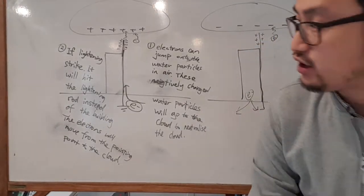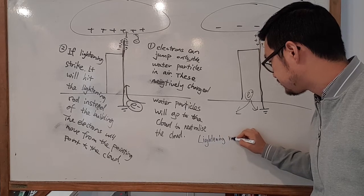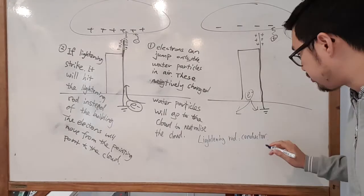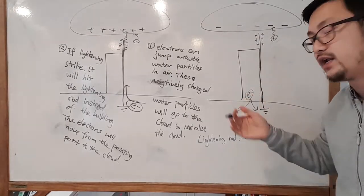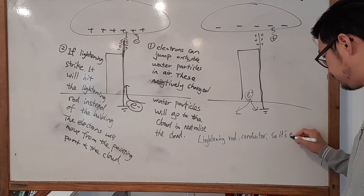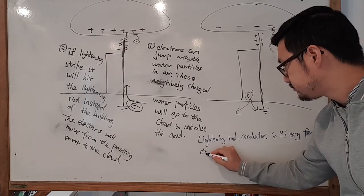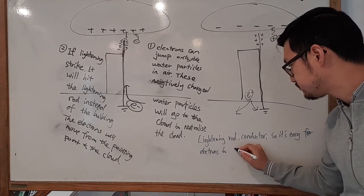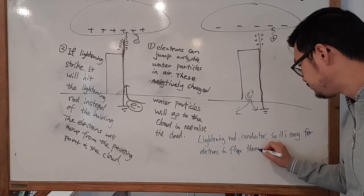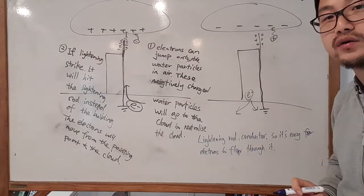You might get a question asking why the lightning rod needs to be a conductor. It has to be a conductor so electricity can flow easily — so electrons can flow through it freely. This makes it easy for lightning to hit the rod and for the charge to be conducted away safely.